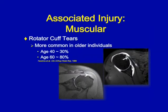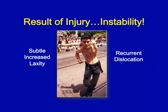Rotator cuff tears are uncommon, more so in the younger patients we typically deal with. Hawkins in 1986 showed this was more common in older individuals — at the age of 40 you have about a 30% likelihood of sustaining a rotator cuff injury, and that likelihood increases with age. The result of all this is instability, whether it's a subtle increase in laxity on one end of the spectrum, or recurrent dislocation on the other. Once this injury takes place, you fall somewhere on that spectrum.